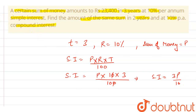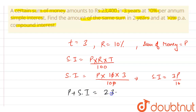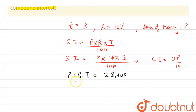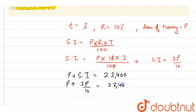As we are given that the sum of money amounts to 23,400 with simple interest, this means p plus SI equals 23,400. So p plus 3p/10 equals 23,400.